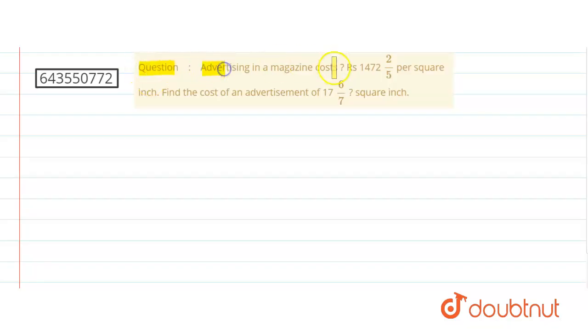We have advertising in a magazine costs rupees 1472 2/5 per square inch. Find the cost of advertisement of 7 6/7 square inches. So what is the cost of this total? The area of this advertisement is 7 6/7.